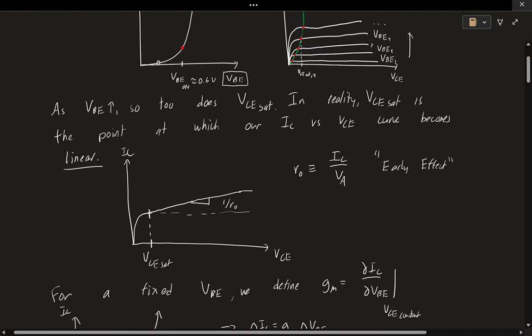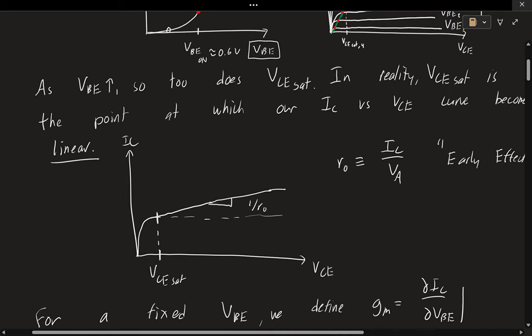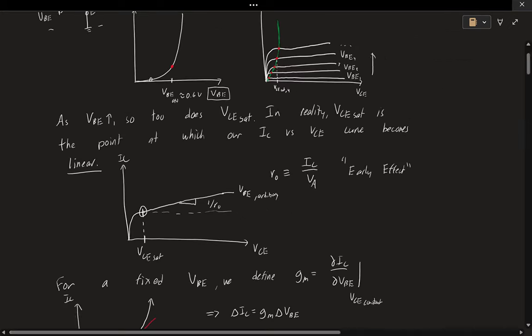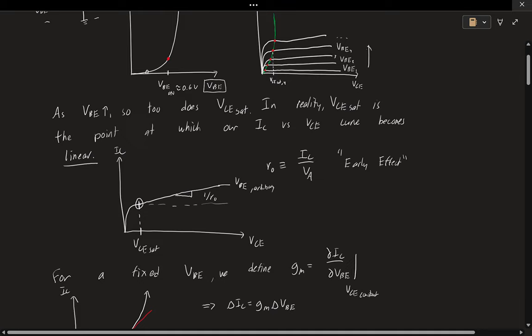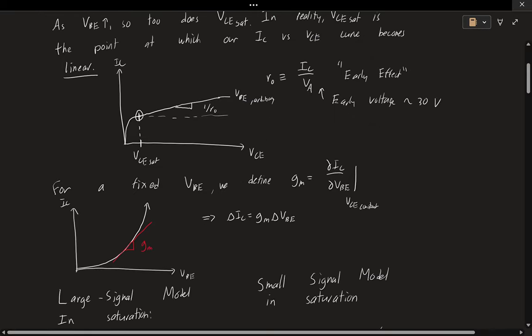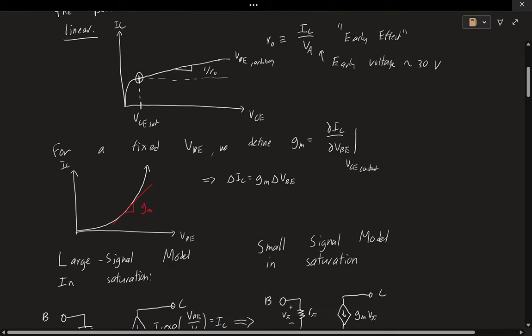And from lecture we talked about this this has to do with the so-called early effect here. So just for one arbitrary VBE curve here. So there will be some point at which we go from this weird kind of exponential to now just being linear. Call that VCE sat. And then after this point it starts to increase with a slope of one of our R0. Our R0 is IC or VA. And VA we call the early voltage. And it's typically around 30 volts or so. So that's great. We've now covered some of the current responses of our transistor and it's our signal model.